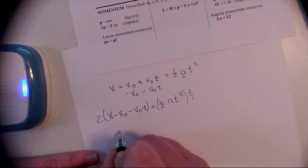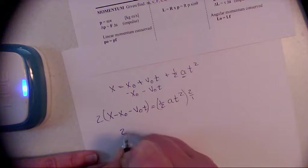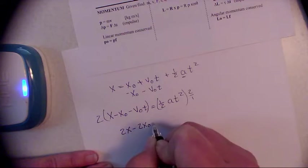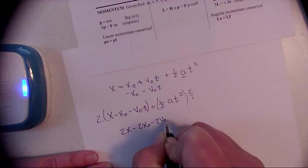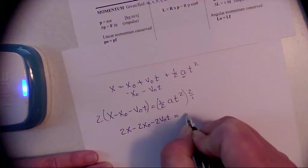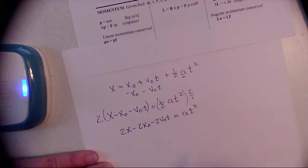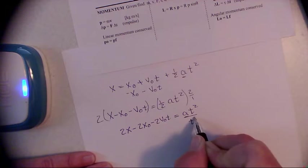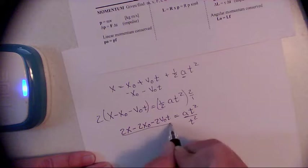Rewrite it, I get 2x minus 2x naught minus 2v naught t equals at squared. Now we want to solve for a, so to do that let's divide by t squared and get it gone over here, move it over here.